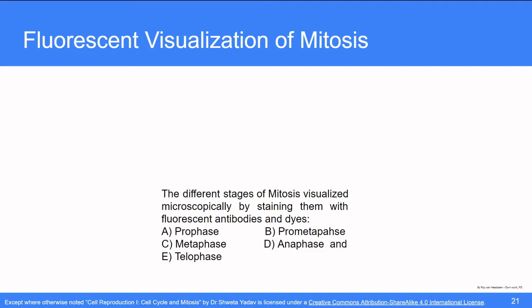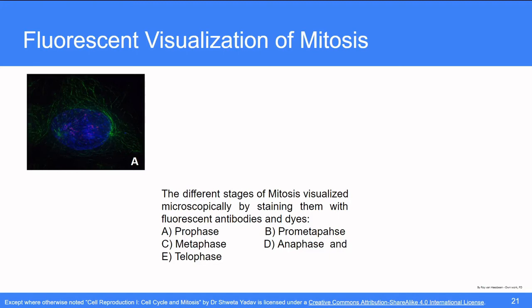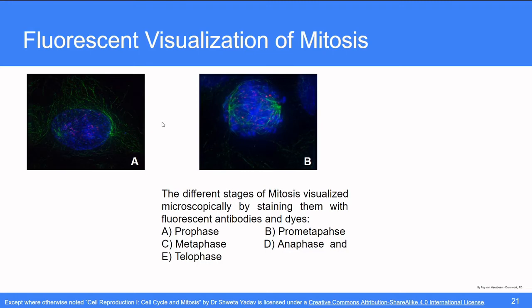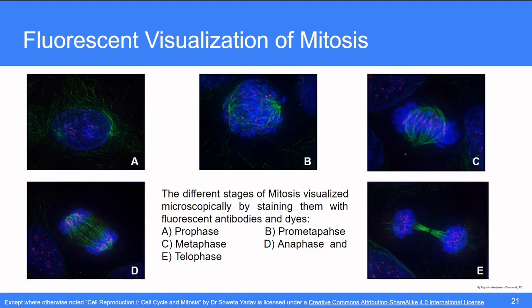Here are the different stages of mitosis visualized microscopically by staining them with fluorescent antibodies and dyes. The first one is prophase, then prometaphase, metaphase, anaphase and telophase. You can see that the spindle fibers are stained green, the centromeres are stained pink and the chromosomes are stained blue. In the beginning or prophase, the centromeres and the chromosome part, the pink and blue part are lying all around the cell while the spindles are concentrated more on the ends. And by the time of metaphase, you can see all the centromeres are lying on the metaphasic plate while the spindles have spread completely. During anaphase, you can see the spindles are covering up the area while the chromosomes are moving towards the end and in telophase, the two separate daughter nuclei are clearly visible.